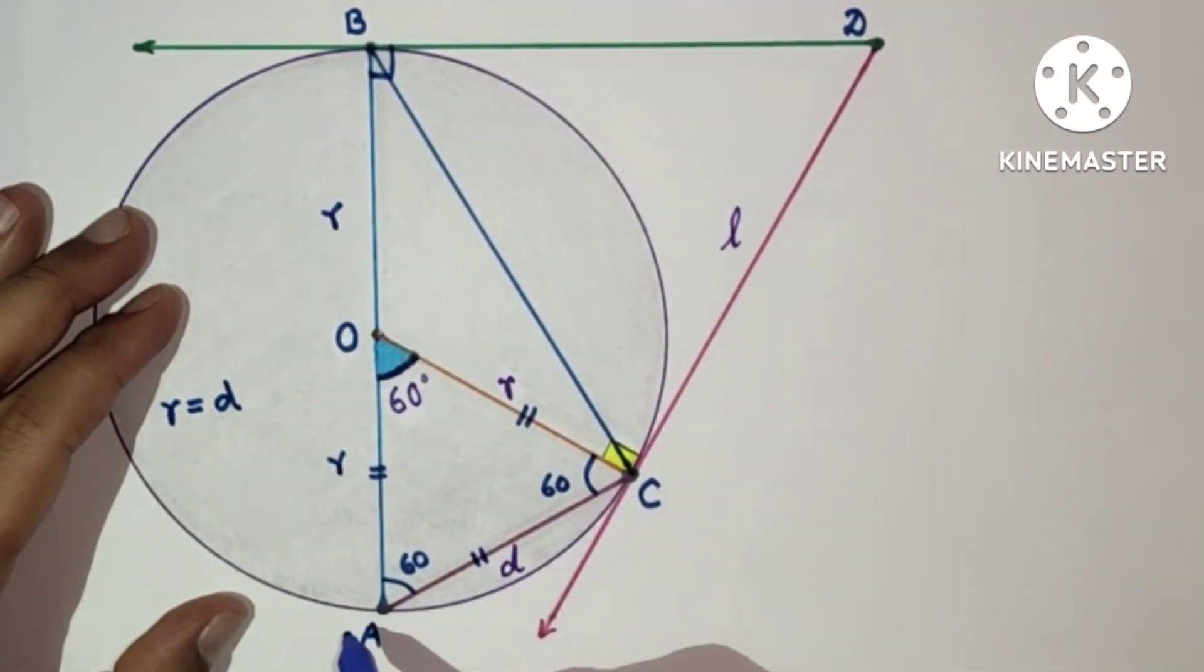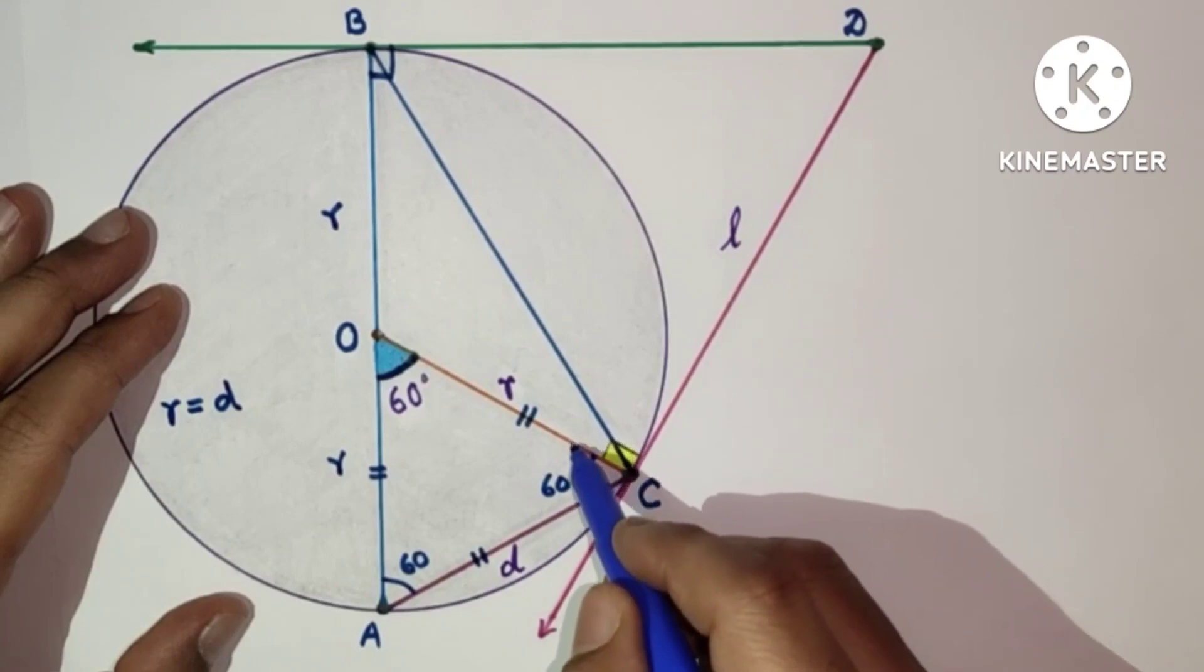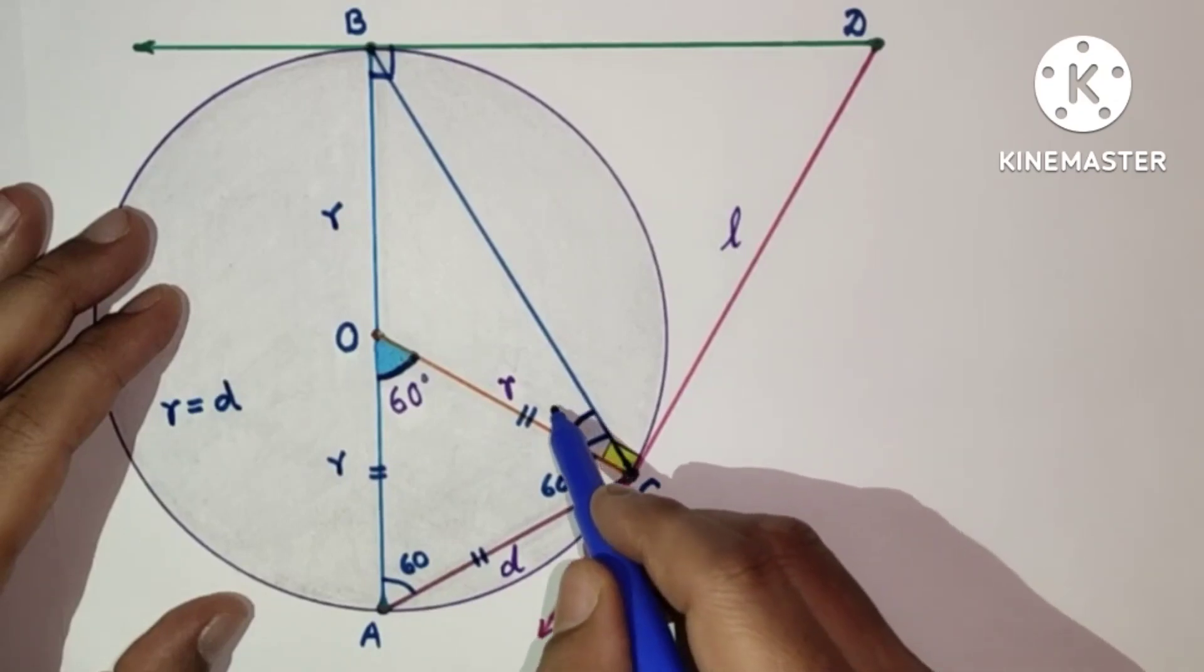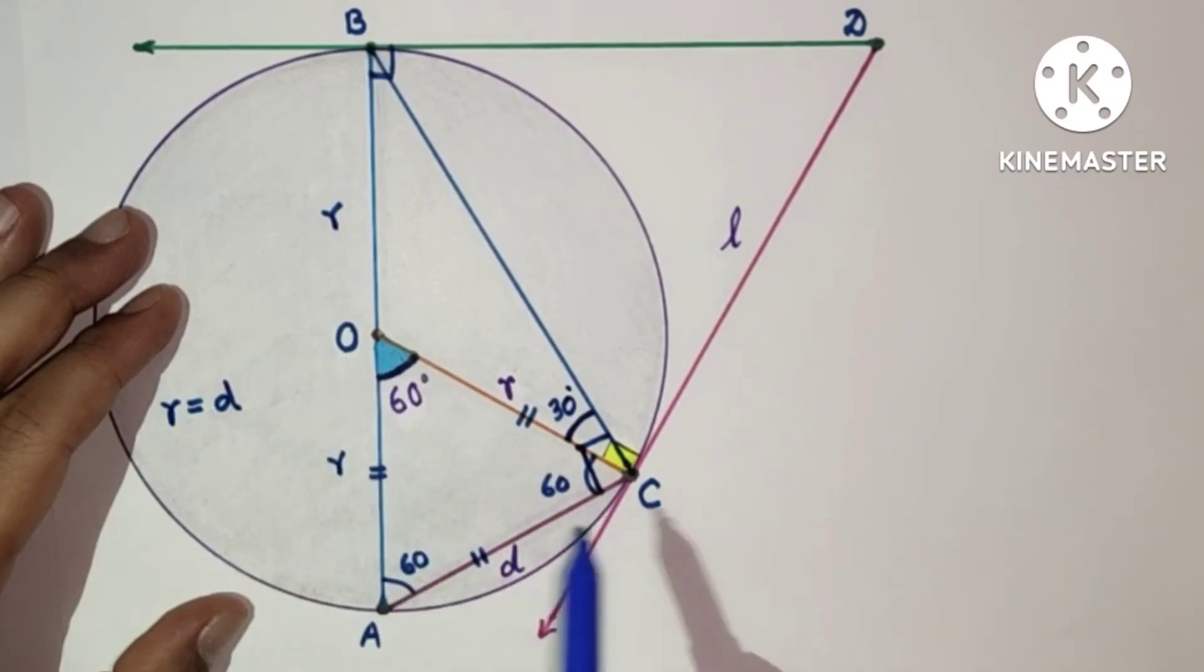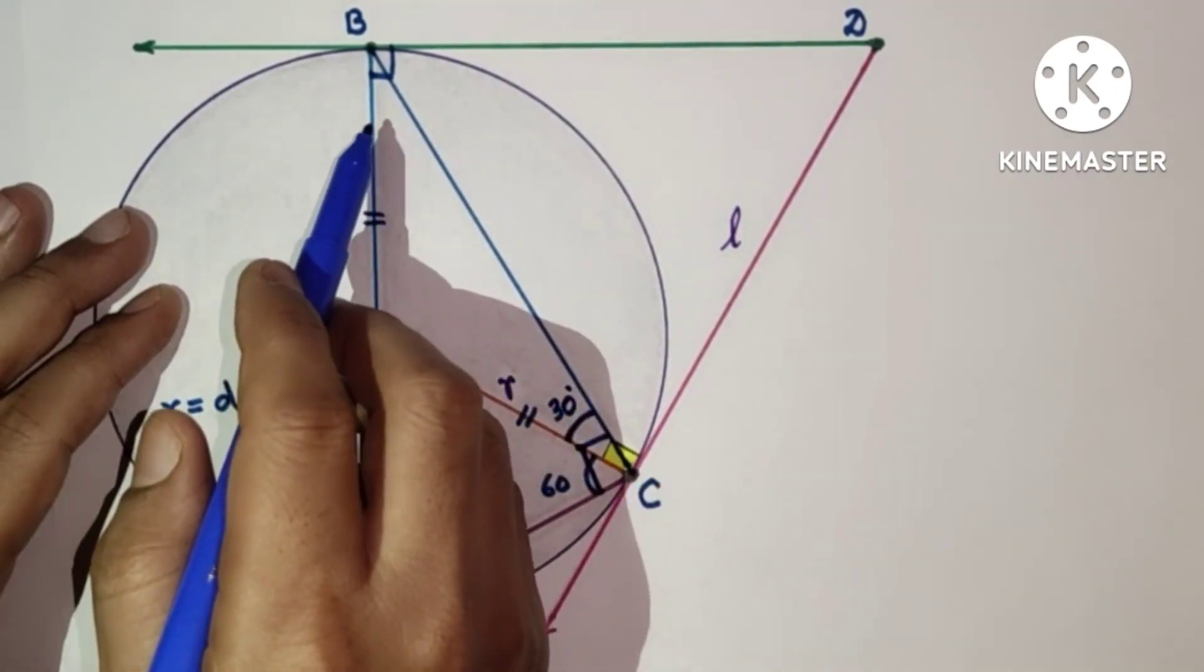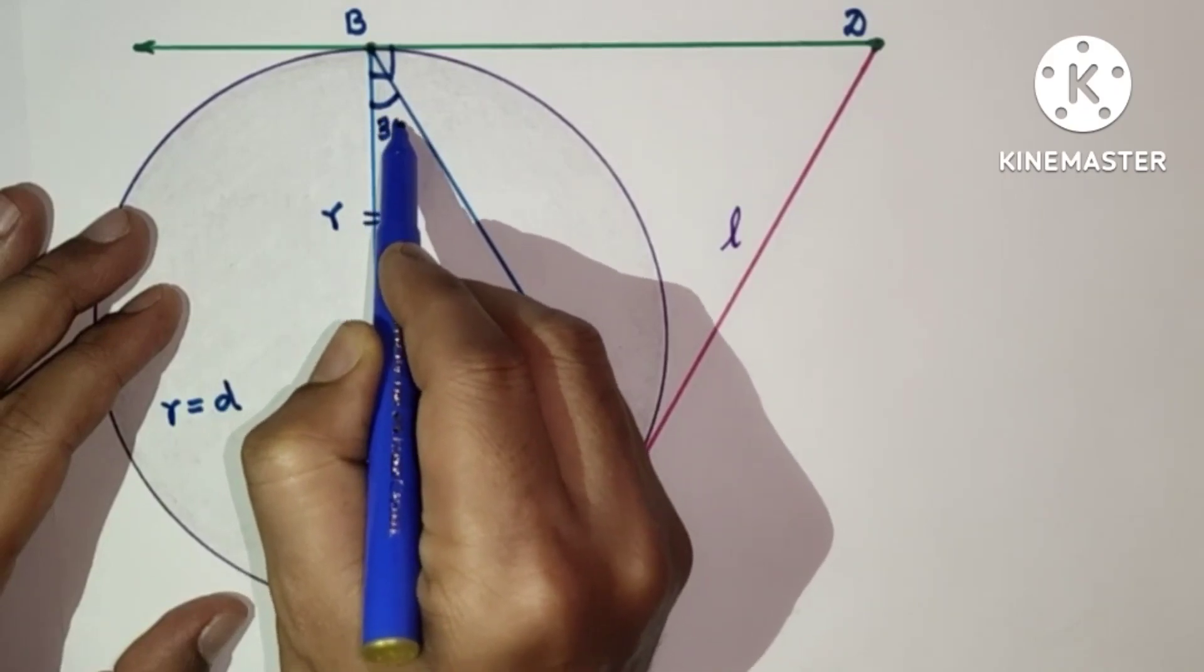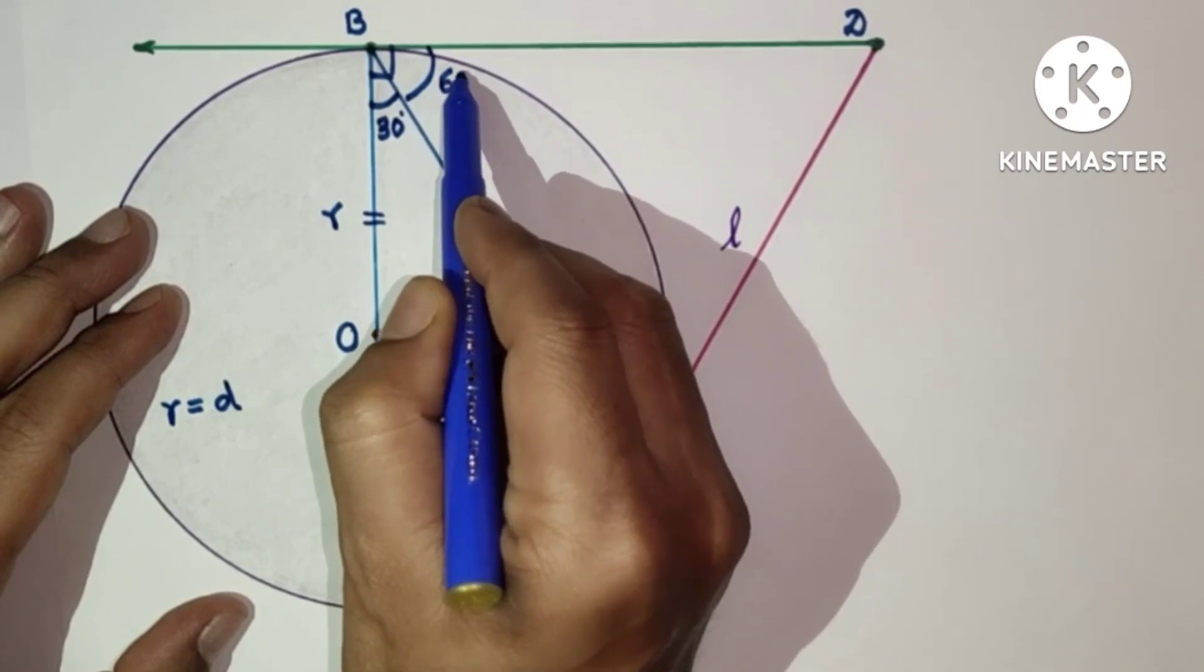AB is diameter, diameter subtends right angle. This angle is 90 degrees. So this is 90 and this is 60, so this remaining angle will be 30 degrees. Since OC is equal to OA, it means this angle will also be 30 degrees. This is 90, this is 30, so this angle will be 60 degrees.